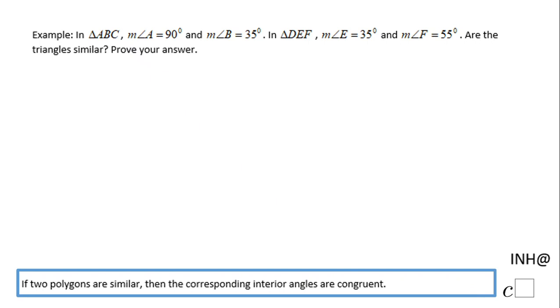Welcome back to I Need Help at C Square. In this example, we have two triangles: triangle ABC, which has angle A being 90 degrees and angle B being 35 degrees, and triangle DEF, which has angle E measuring 35 degrees and angle F measuring 55 degrees. We are asked if these two triangles are similar and we need to prove our answer.